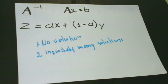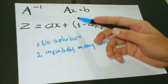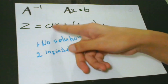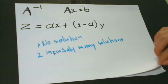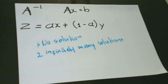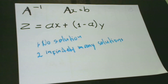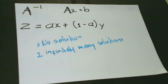If both x and y are solutions, then z equals ax plus the quantity of 1 minus a times y is also a solution for any real value of a. The reason this is possible is that it is not possible to have more than one but less than infinitely many solutions for a certain value of b.